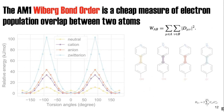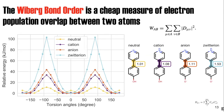We can use the AM1 Wiberg Bond Order (WBO), which is a cheap measure of electron population overlap between two atoms. It is calculated by taking the quadratic sum of the occupied orbitals on atoms A and B in the bond. This value, the Wiberg Bond Order, gives us a number that is very closely correlated with what chemists think about when they think about bond multiplicity.